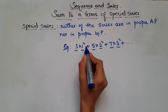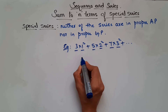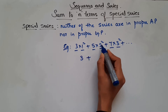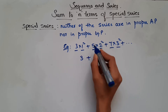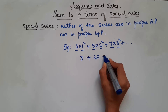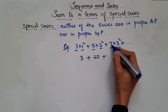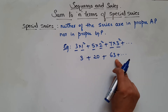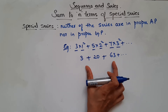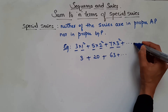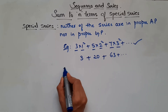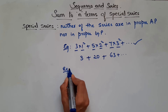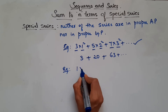Also, looking at the whole terms: 3·1=3, 4·5=20, 9·7=63 and so on — these terms are not in AP nor in GP. So such series are called special series.